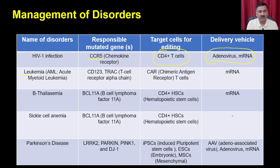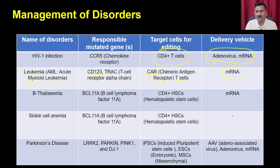Another example is leukemia — specifically acute myeloid leukemia or AML — where the mutated gene is present in CD123 or TRAC. TRAC is the T cell receptor alpha chain. The target cell therapy is by CAR T cells. You generate chimeric antigen receptor T cells by delivering messenger RNA into a particular T cell type, generating chimeric cells that cure leukemia.